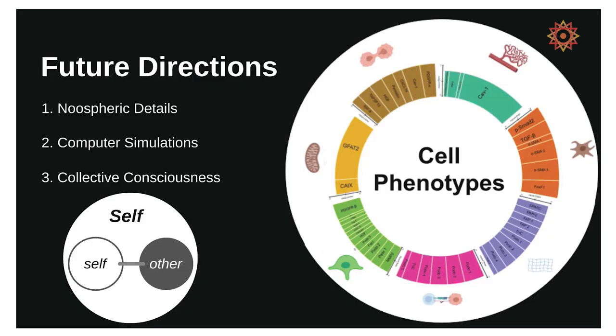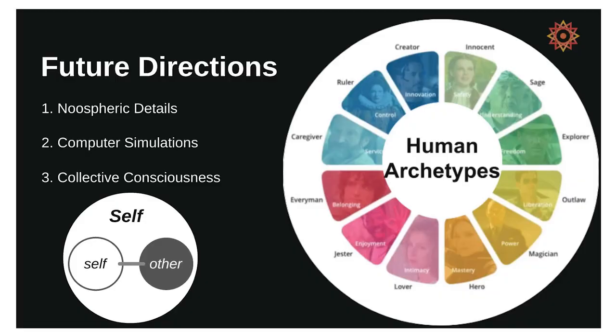Here's one way to start thinking about that: cells form all these diverse phenotypes — they take on unique roles within multicellular systems. I think as human beings we do that too — in our professional jobs, but also in terms of what brings us meaning, our deep human archetypes. I think all of those are part of what's needed to help organize the noosphere on a larger scale.